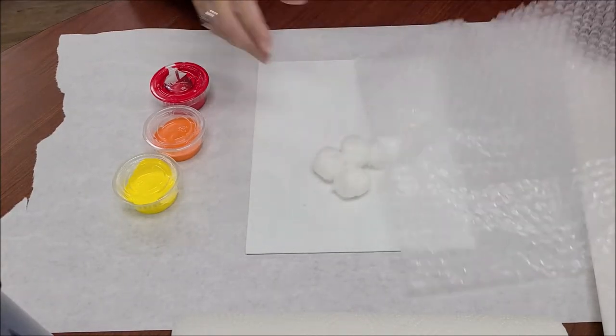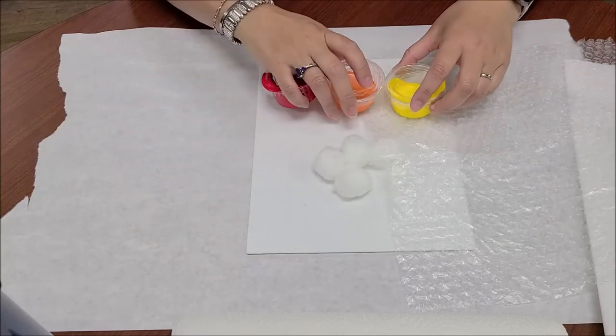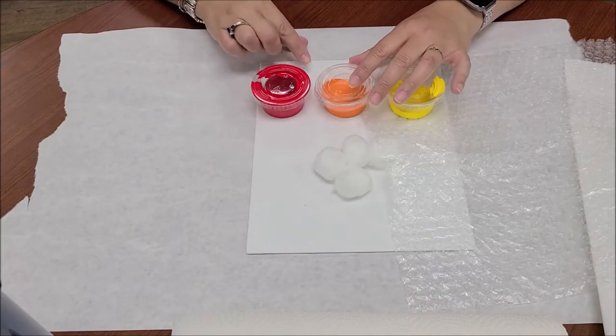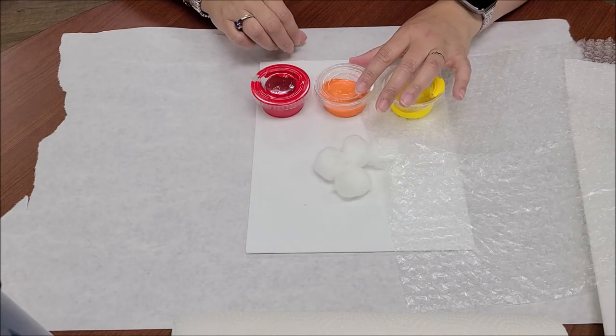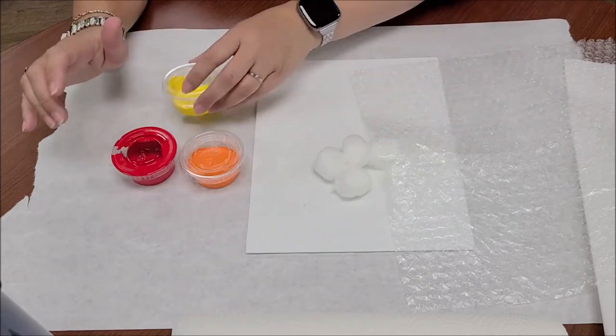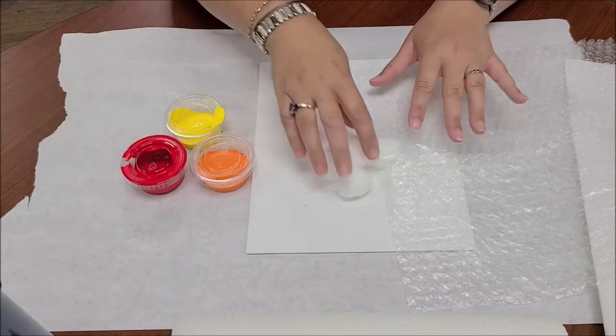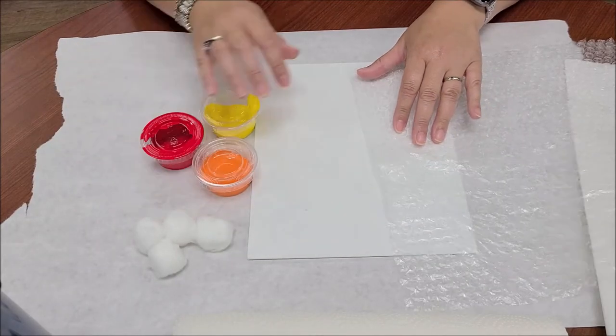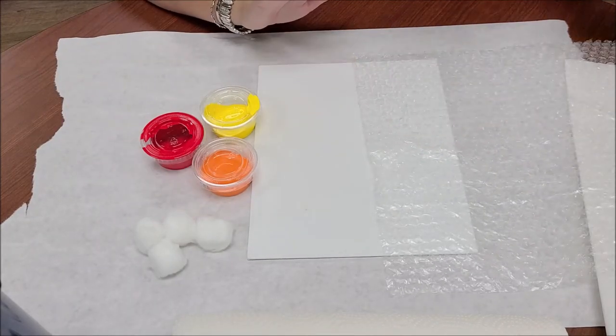And three random pots of paint. I'm just using the ones that were left from when I did the fall scene that we painted a couple weeks ago. So I'm going to use red, yellow, and orange, but you'll have random ones in your kit. If you have other acrylic paints that you'd like to use, by all means, go ahead and do so. And that's it.